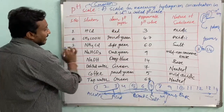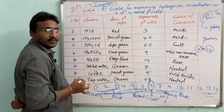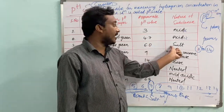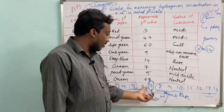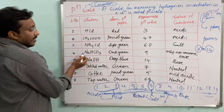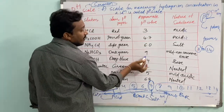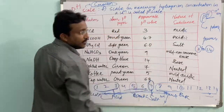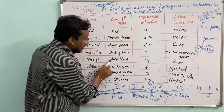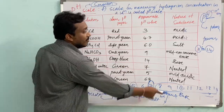Ammonium chloride gives a light green color with the pH indicator, with an approximate pH value of 6. Sodium hydrogen carbonate gives a dark green color with an approximate pH value of 9, indicating a milder base. Sodium hydroxide (NaOH) gives a deep blue color with a pH value of 14, indicating it is a strong base.